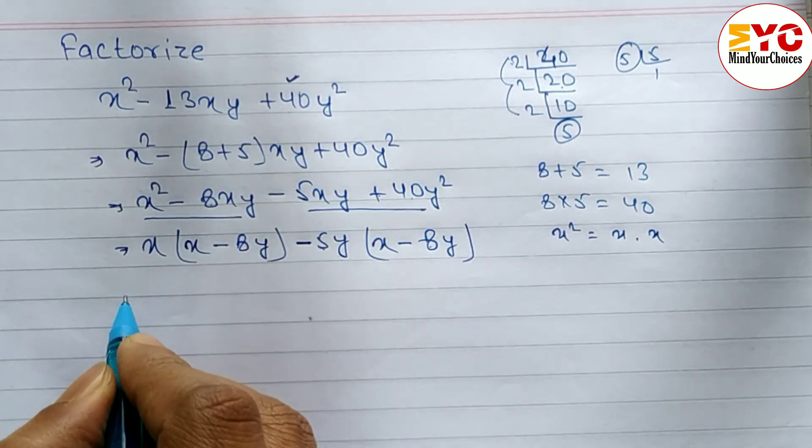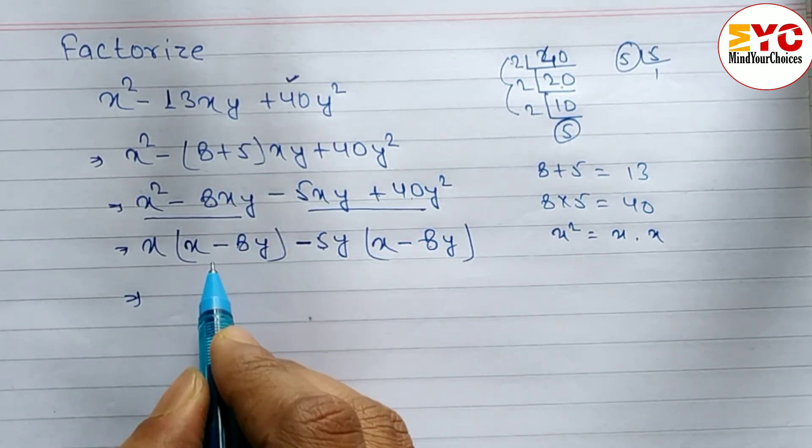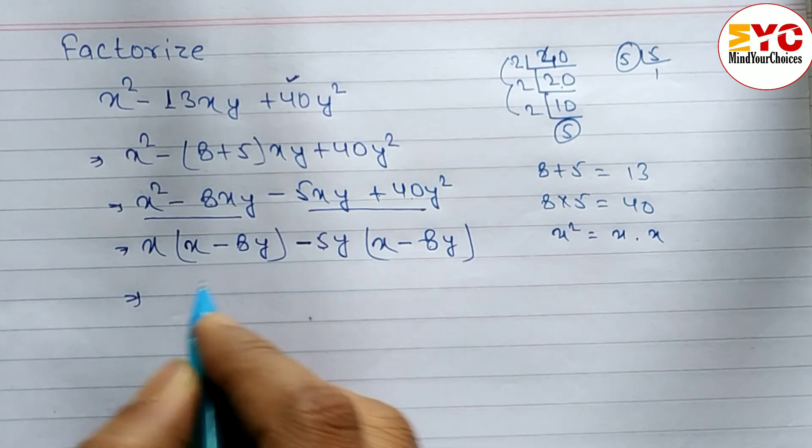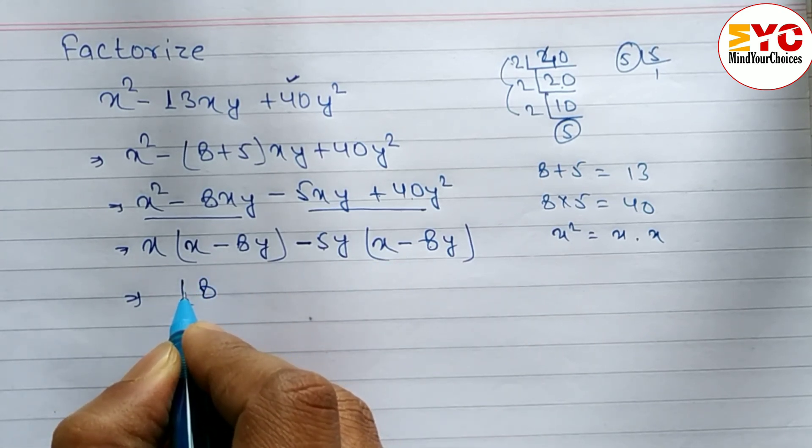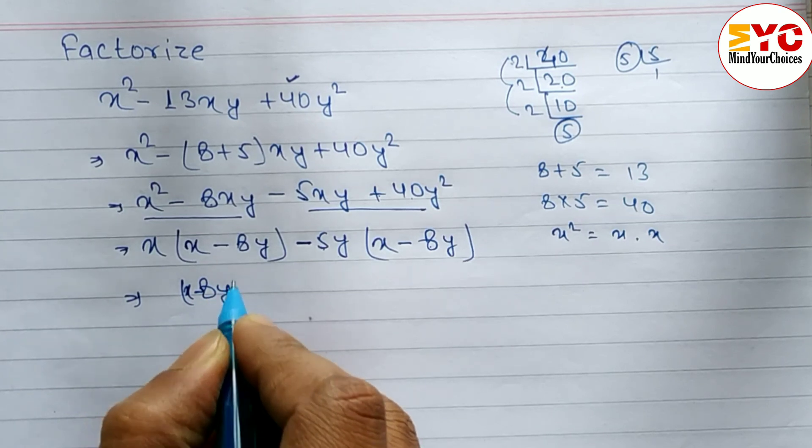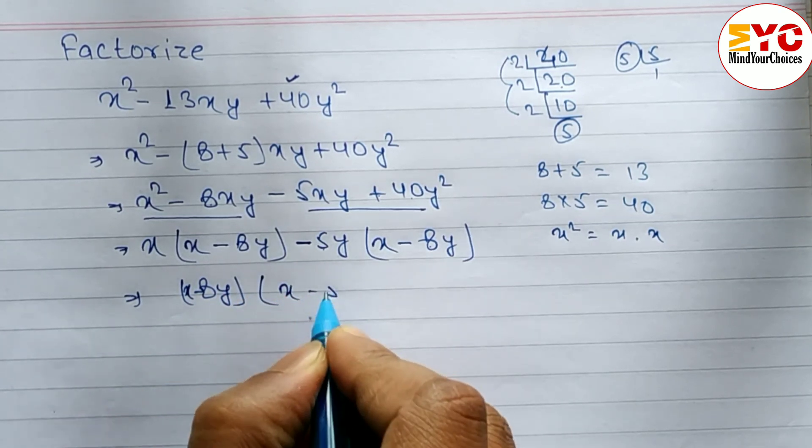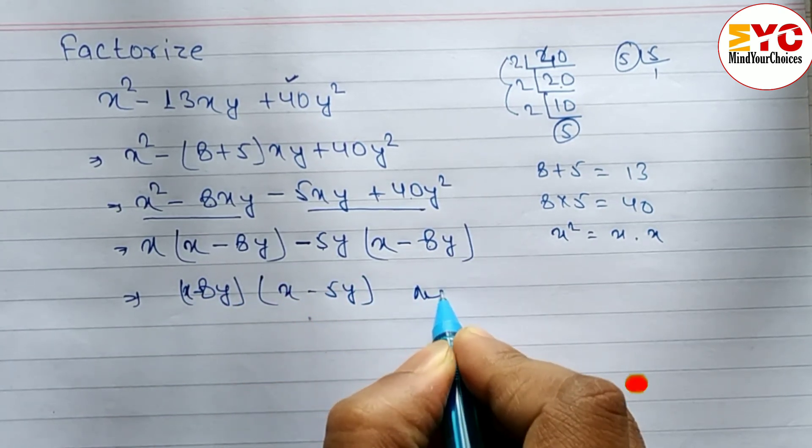Now (x minus 8y) appears in both terms, so we take (x minus 8y) common and the remaining is (x minus 5y). So the answer is (x minus 8y)(x minus 5y).